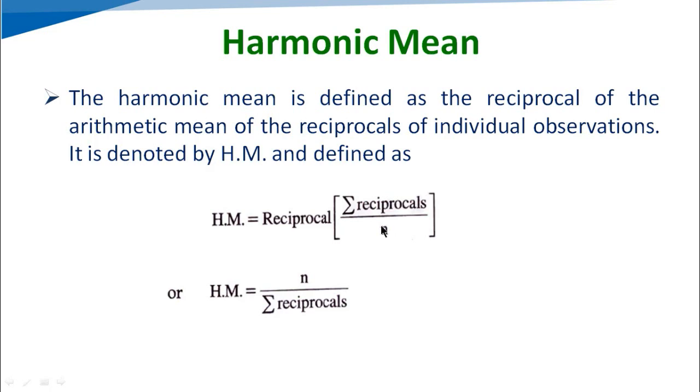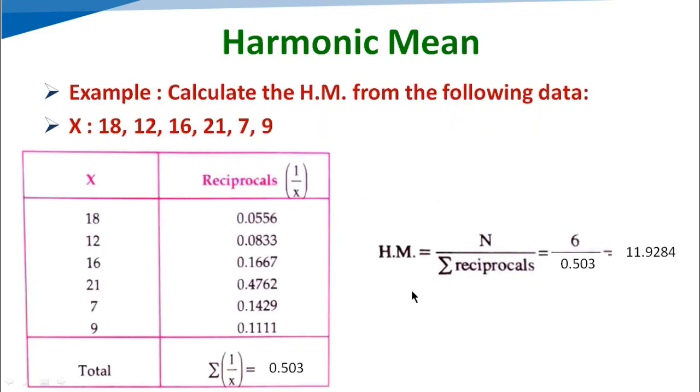In simplified form, harmonic mean equals n divided by summation of reciprocals. Let's take an example. Calculate the harmonic mean from the following data. Data has been given: 18, 12, 16, 21, 7, 9.